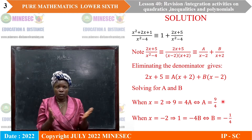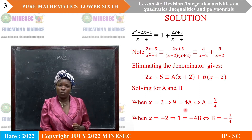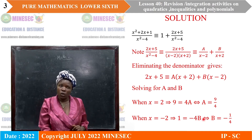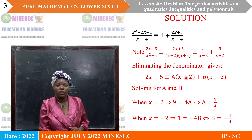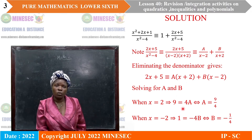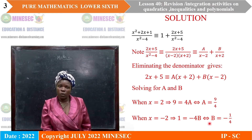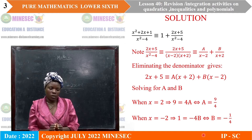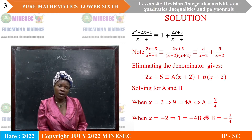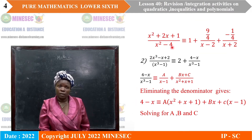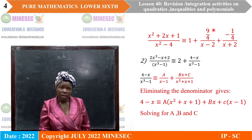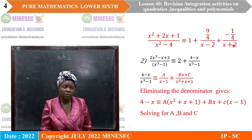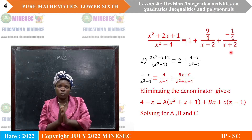Solving for a and b: when x equals 2, this implies 9 equals 4a, so a equals 9 over 4. When x equals negative 2, the term in a cancels out and we are left with 1 equals negative 4b, so b equals negative 1 quarter. Therefore, x squared plus 2x plus 1 divided by x squared minus 4 equals 1 plus 9 over 4 divided by x minus 2 plus negative 1 quarter divided by x plus 2. That is the fraction decomposed into partial fractions.